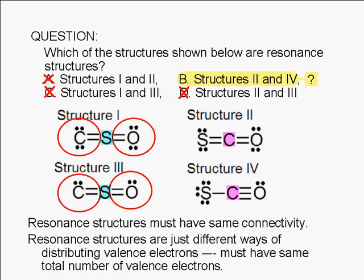Therefore, structures 1 and 3 are not resonant structures. In fact, structure 3 is not even a valid Lewis structure. The carbon and oxygen do not follow the octet rule.